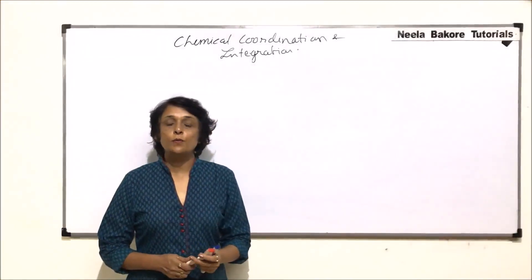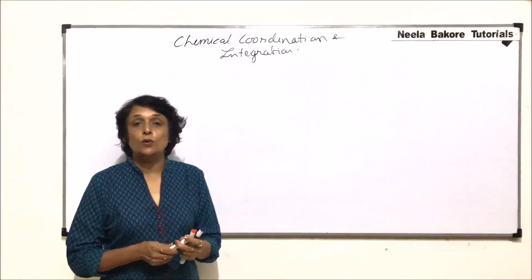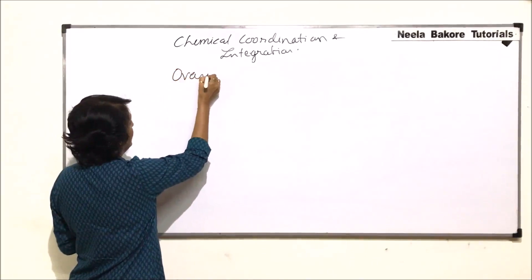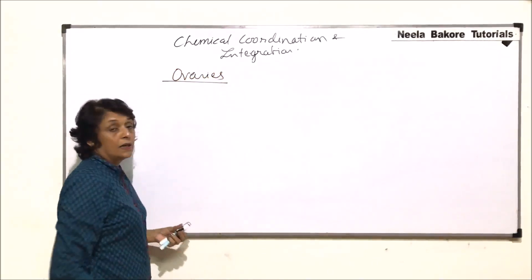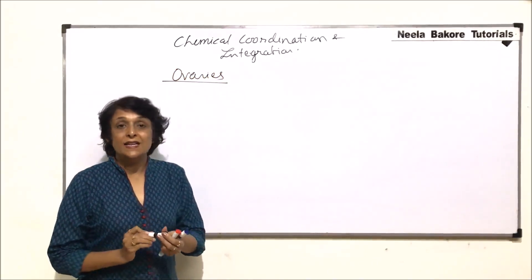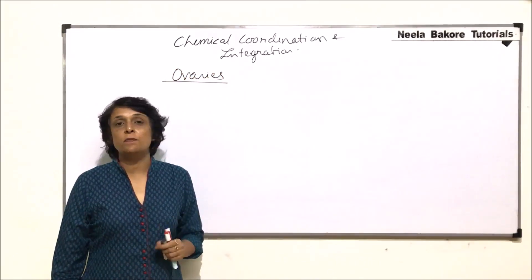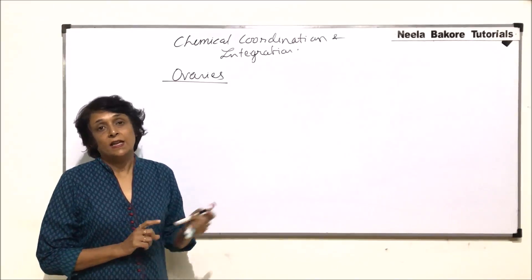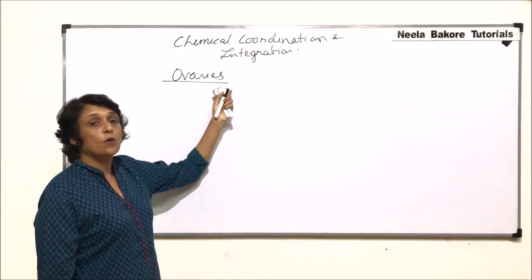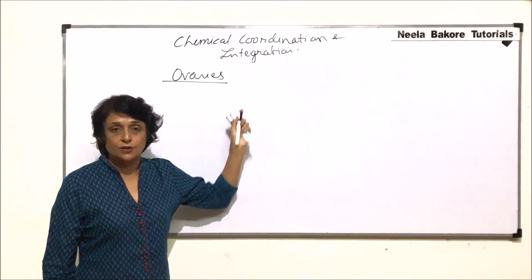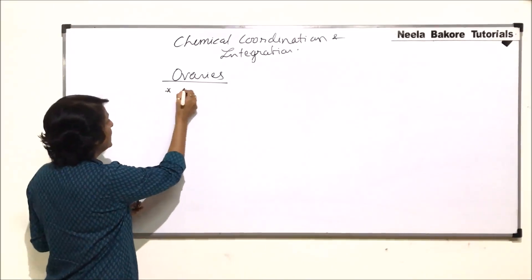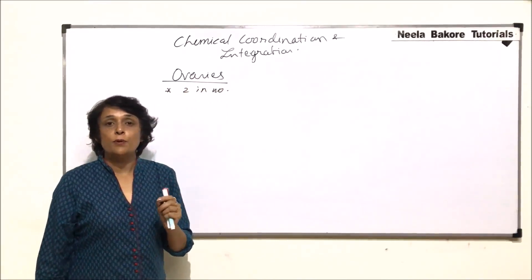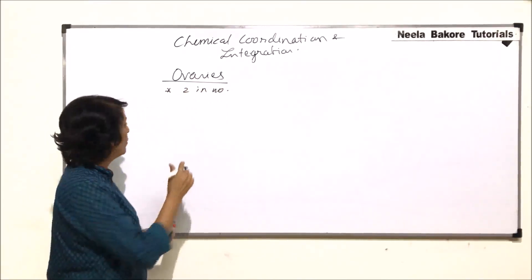In this video we will be talking about the hormones produced from the ovaries. Similar to testes, ovaries are the primary reproductive organs in females. Ovaries are also paired structures, so they are two in number, and ovaries produce three main hormones.